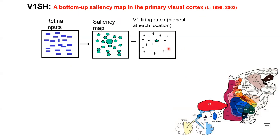However, I am going to argue it's actually in V1. My equation is: the saliency map — a behavioral, psychological entity — equals V1 firing rate, a physiological entity. The equal sign is my hypothesis: the V1 Saliency Hypothesis. Notice that V1 projects to the superior colliculus, which controls eye movement. Superior colliculus projects to the brainstem which then moves your eye muscles. This anatomical projection has been known for decades.